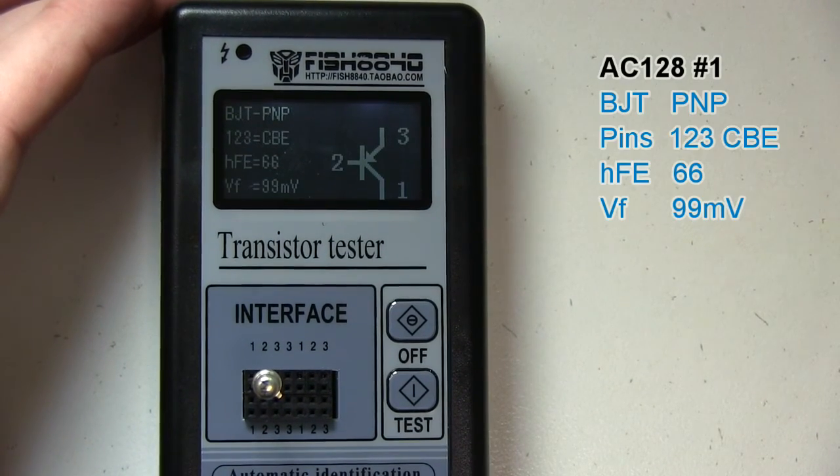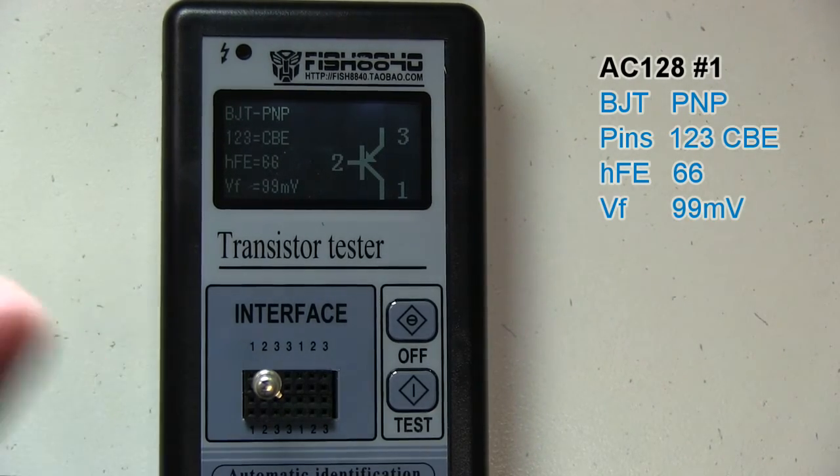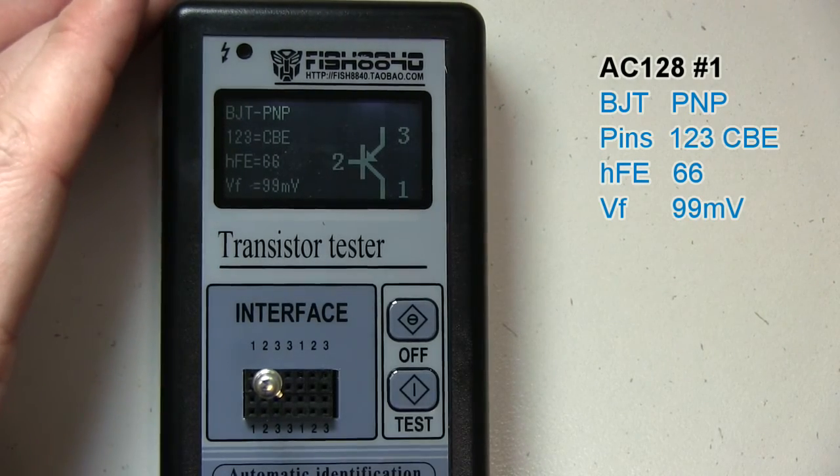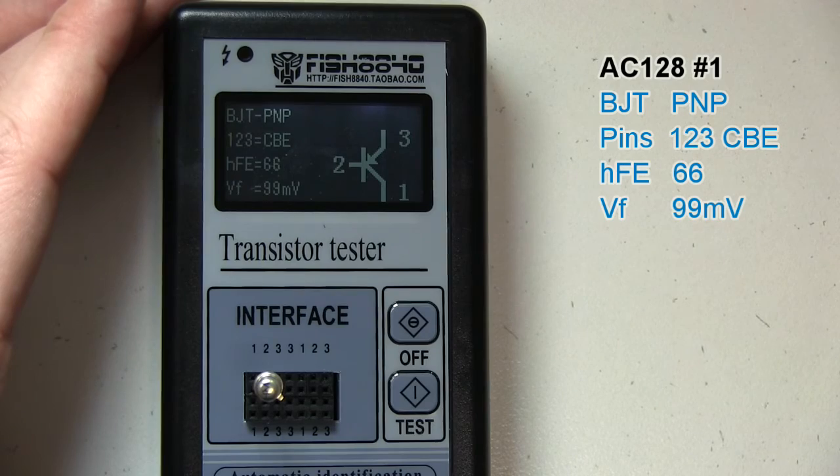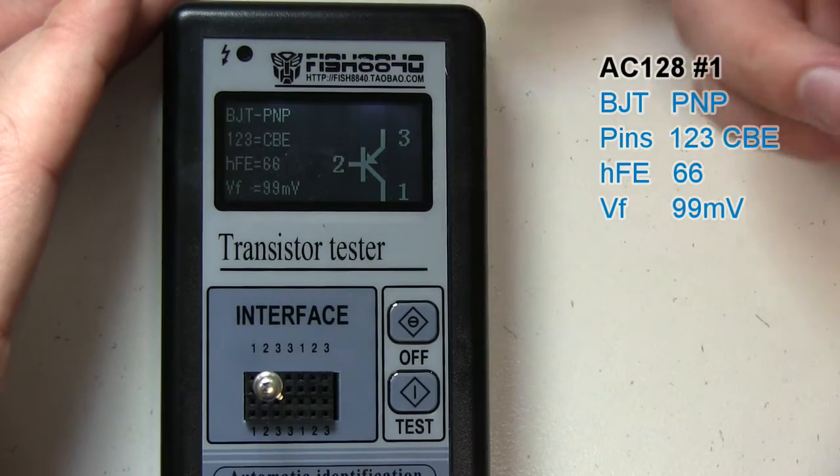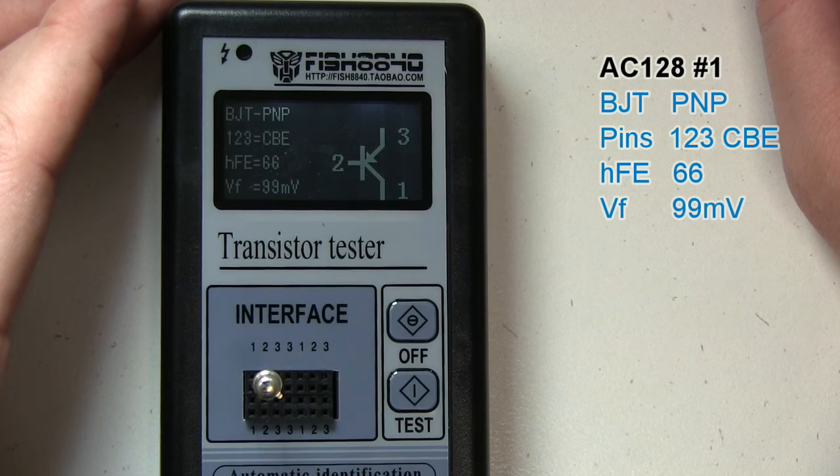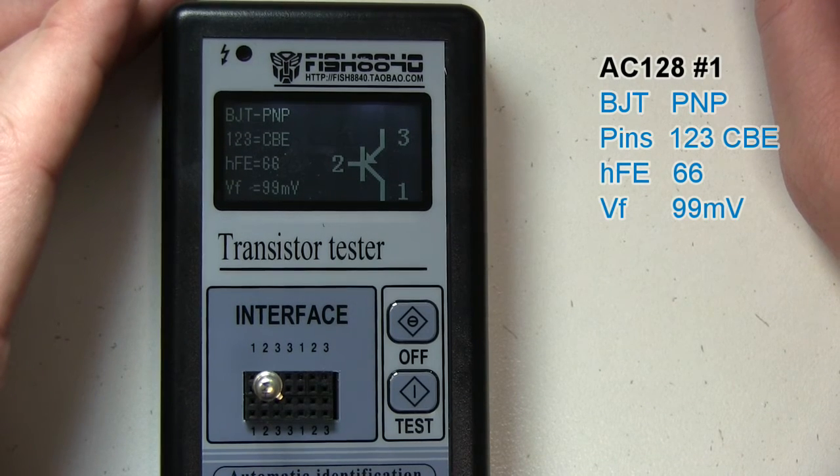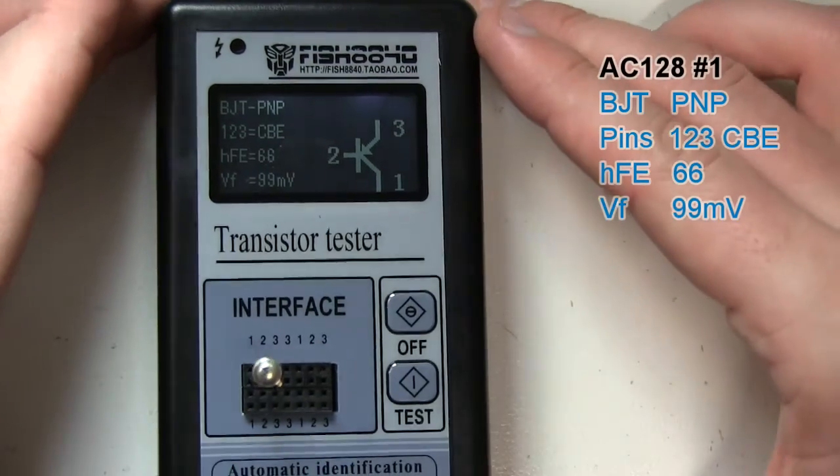Testing. BJT PNP. There you go. So it's a bipolar junction transistor PNP, and it's telling us this one, two, three is collector base emitter. And from memory, that is correct from the data sheet, because we were looking at it from the bottom. This is now flipped to the other way. HFE of 66, and we had a minimum of 45, so that looks good. And VF, I think that's forward voltage of 99 millivolt. So that sounds good. So that seems to be working.